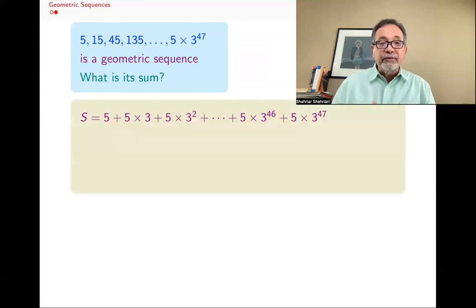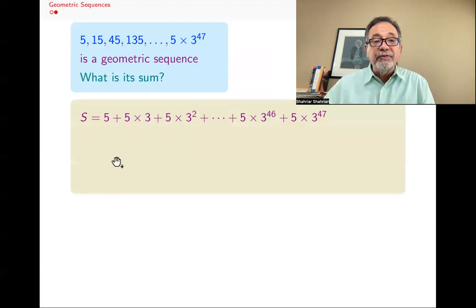So S is 5 + 5×3 + 5×3^2, because every time, every term, instead of writing 15, I wrote 5×3. Instead of 45, I wrote 5×3^2, and so forth. The penultimate term is 5×3^46. The last one is 5×3^47.